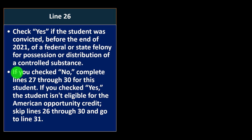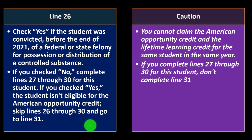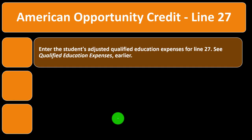Line 26: check yes if the student was convicted before the end of 2021 of a federal or state felony for possession or distribution of controlled substances. If you checked no, complete lines 27 through 30 for this student. If you checked yes, the student isn't eligible for the American Opportunity Credit — skip to line 31. Caution: you cannot claim the American Opportunity Credit and the Lifetime Learning Credit for the same student in the same year.